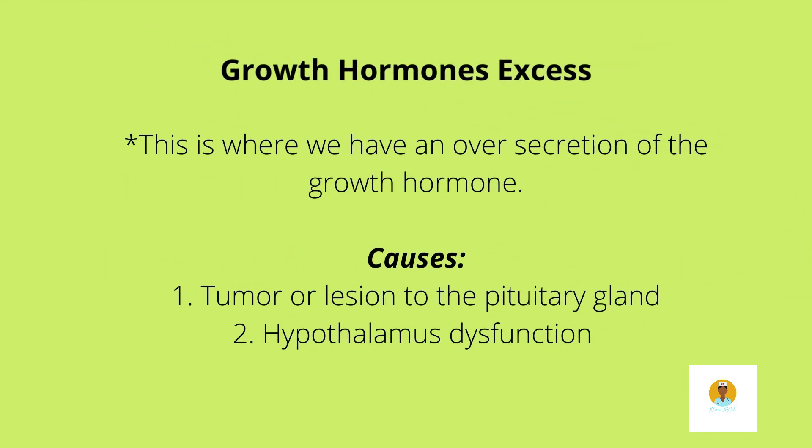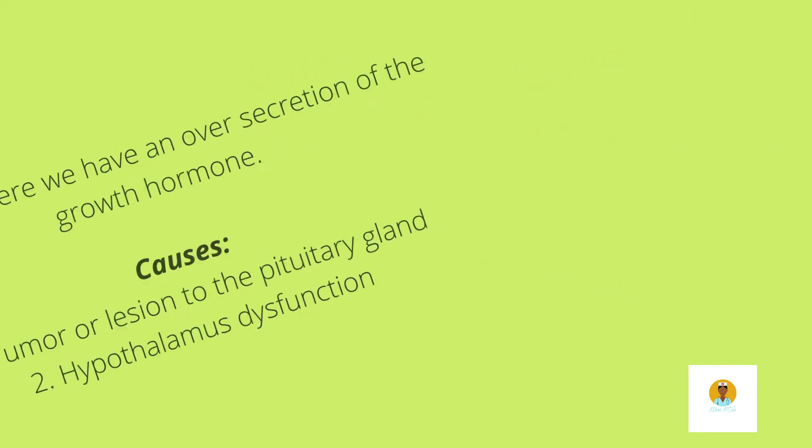Growth hormone excess is where we have an excess secretion of growth hormone from the anterior pituitary gland. This could be due to some kind of tumor or lesion in the pituitary gland or some dysfunction with the hypothalamus. This can lead to an increase of growth of bone and cartilage and an increase of protein synthesis.